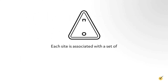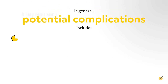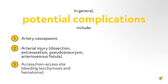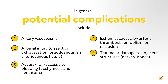Each site is associated with a set of major and minor complications which can occur during or after the procedure. In general, potential complications include artery vasospasms, arterial injury, dissection, extravasation, pseudoaneurysm, arteriovenous fistula, access and non-access site bleeding, ecchymosis and hematoma, ischemia caused by arterial thrombosis, embolism or occlusion, trauma or damage to adjacent structures like nerves and bones, and infection.